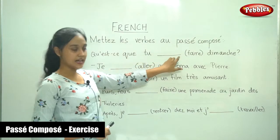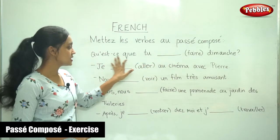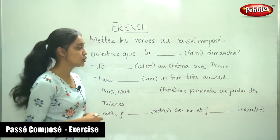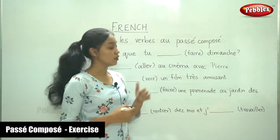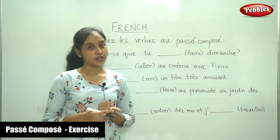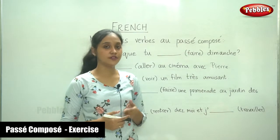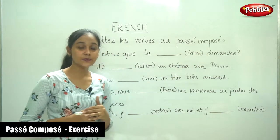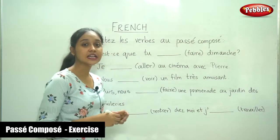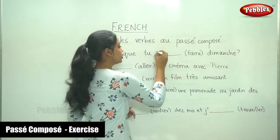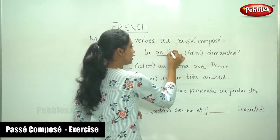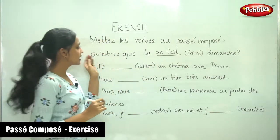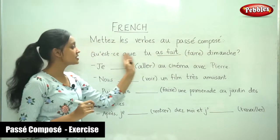Qu'est-ce que tu as fait dimanche? The verb here is faire, which means 'to do.' The rule for passé composé is avoir or être conjugation plus the past participle of the verb. Faire takes avoir as its auxiliary, and the subject is tu. So: tu as... and the past participle of faire is fait. Qu'est-ce que tu as fait dimanche? — What is it that you did Sunday?